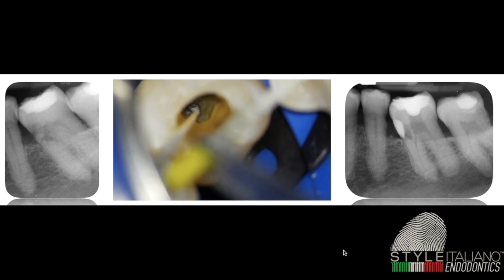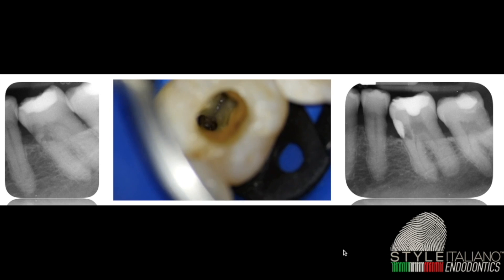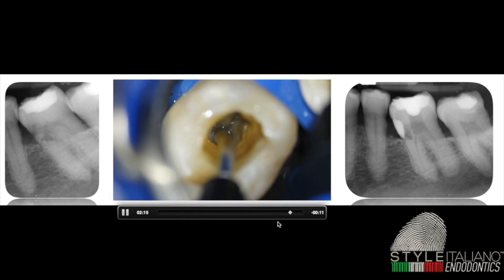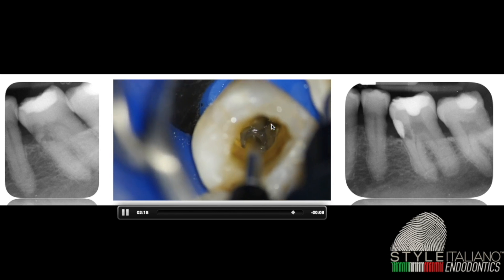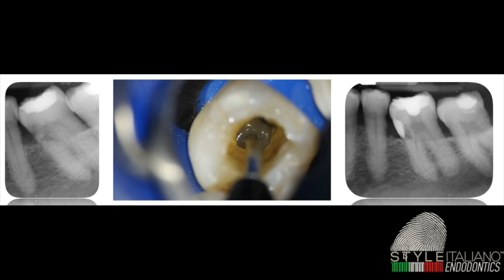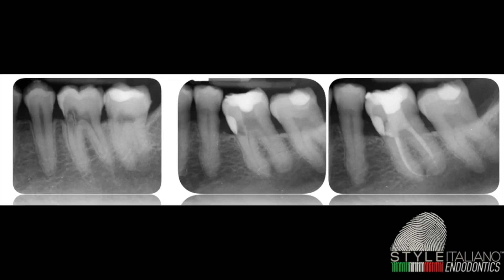The difficulty of this anatomy is that the mesial canals are really close to each other, but they are separate. After obturation, I filled it completely with the bulk system in order to obtain a better result. The follow-up shows that the management in this case was also good.